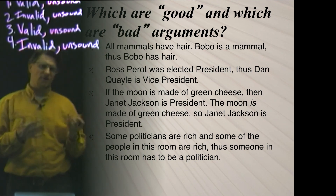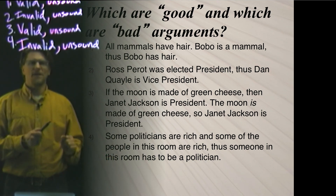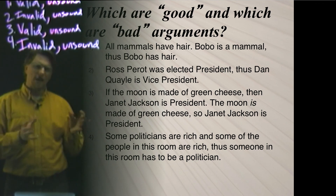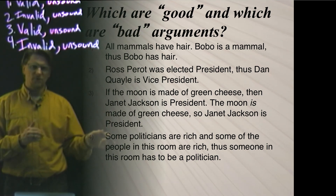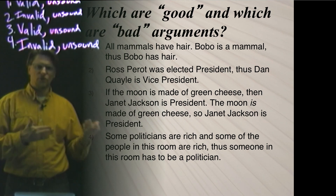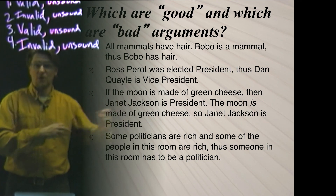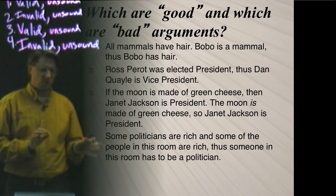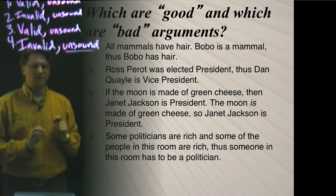Finally, we have the last one about politicians. It was invalid, so it is automatically unsound — we don't have to think about it. For instance, if this were on the exam and a student asked me about the truth value of the second premise — whether people in the room are rich — I would know they've been led astray, because we don't need to know if anyone in the room is rich. We know it's unsound automatically because it's invalid.